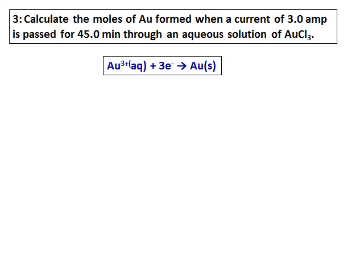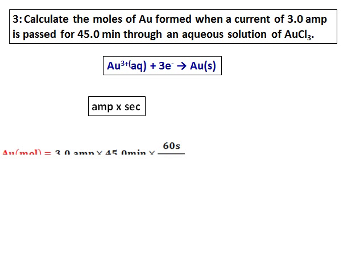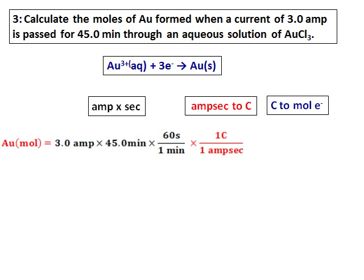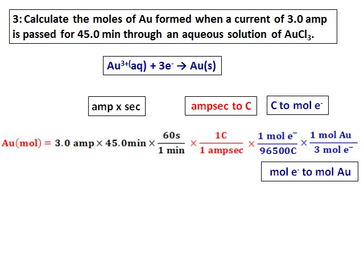Calculate the moles of Au formed when a current of 3.0 amperes is passed for 15 minutes through an aqueous solution of AuCl₃. The equation is Au³⁺ + 3e⁻ → Au. First calculate ampere-seconds, then convert to coulombs, then convert coulombs to moles of electrons, and finally convert moles of electrons to moles of gold using the equation. The moles of gold calculated is 0.03.